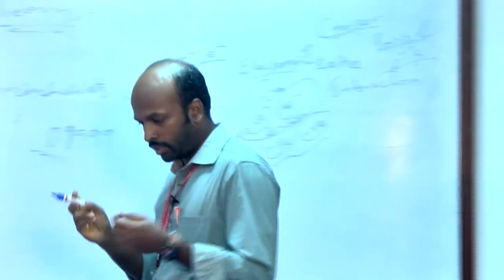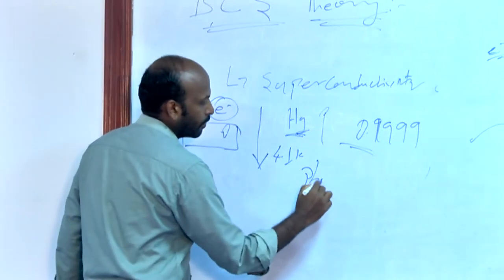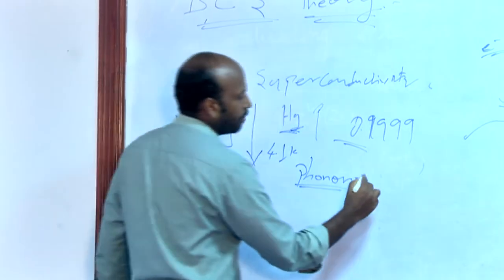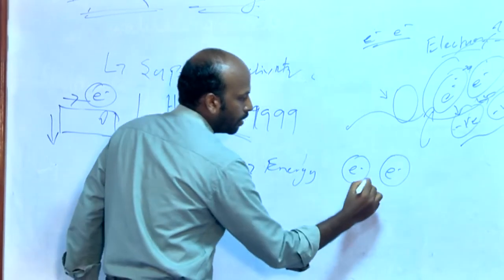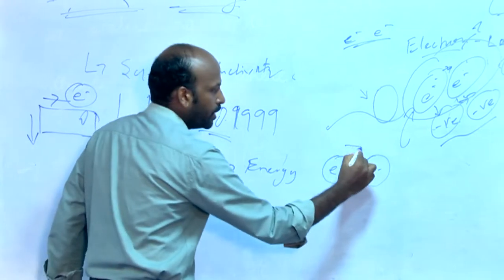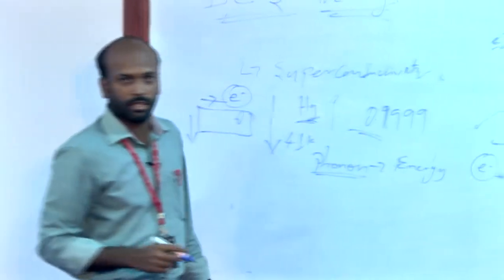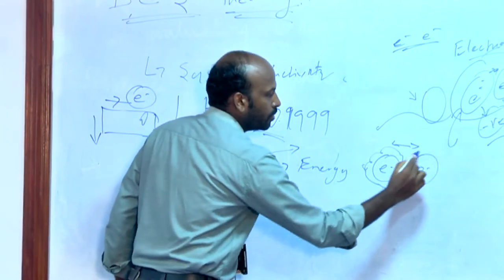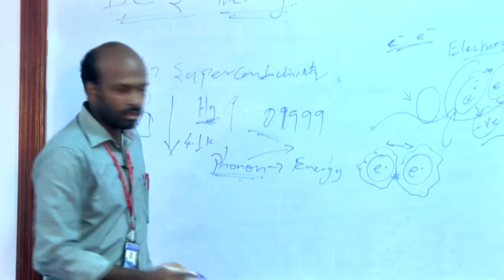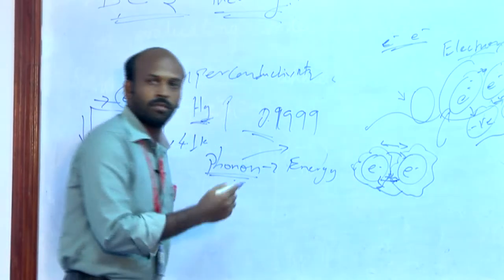How do electrons bind together even though they are the same polarity? The answer is the Phonon. A Phonon is nothing but energy. Consider one electron and another electron — beyond the electrostatic repulsion, a Phonon cloud forms around the surface of the electron. This electron interacts with the Phonon energy, and through transfer of momentum, since momentum is conserved, these two electrons form what are called Cooper pairs.